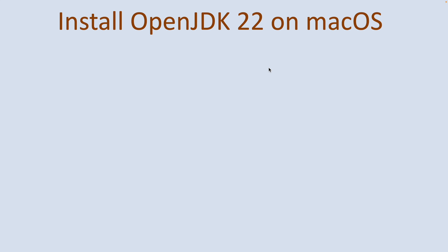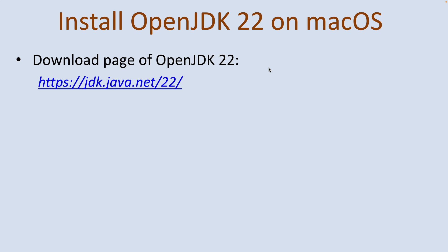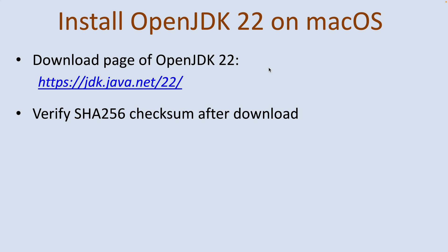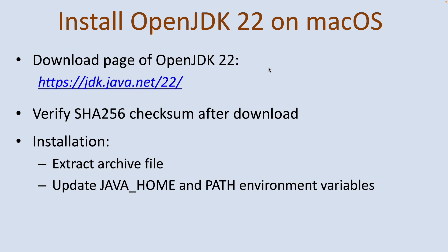To set up OpenJDK 22 on macOS, you should download the binary distribution of OpenJDK 22 from its official download page at this URL, verify the SHA256 checksum after download, extract the archive file, and then update the JAVA_HOME and PATH environment variables.